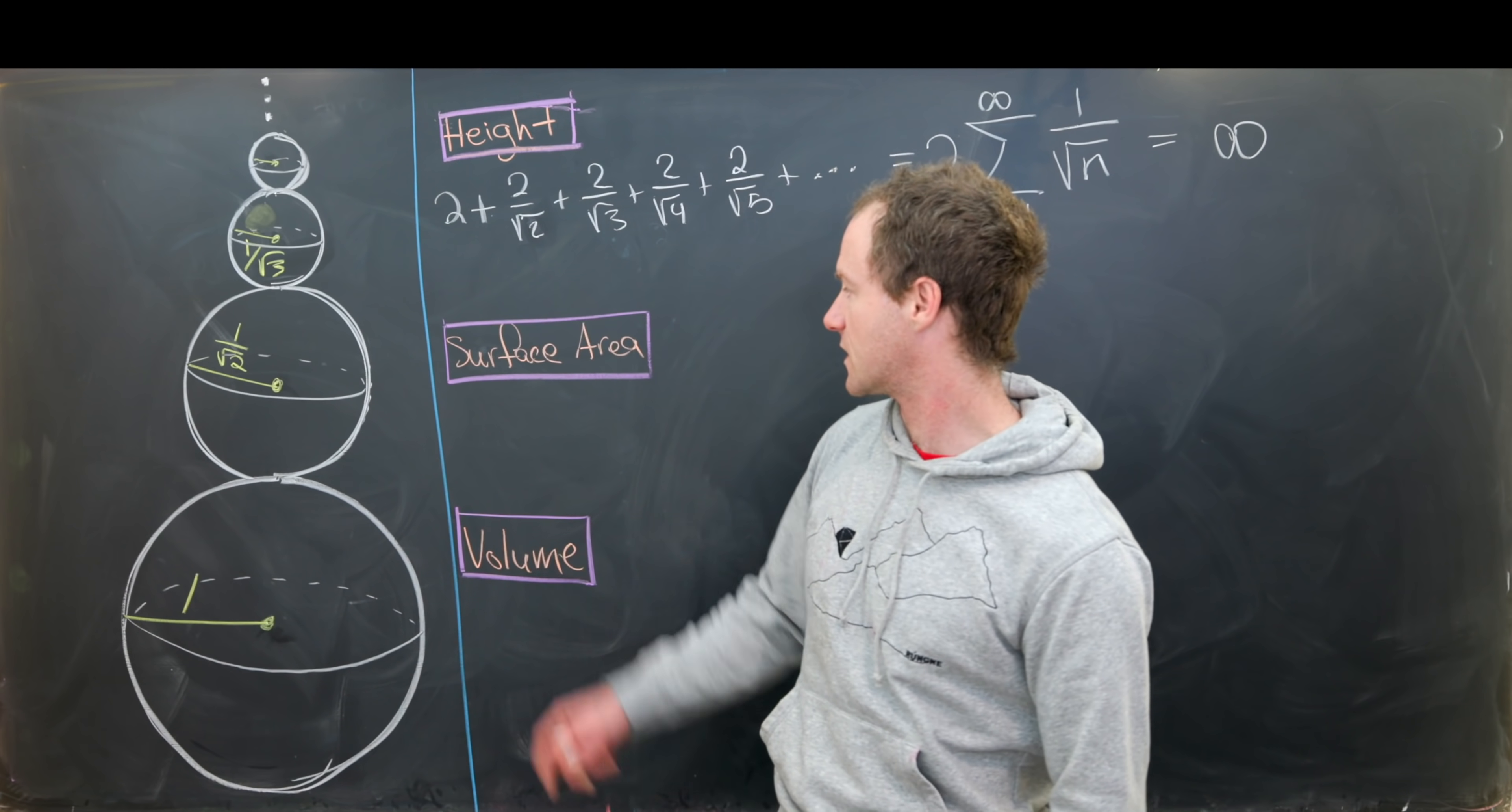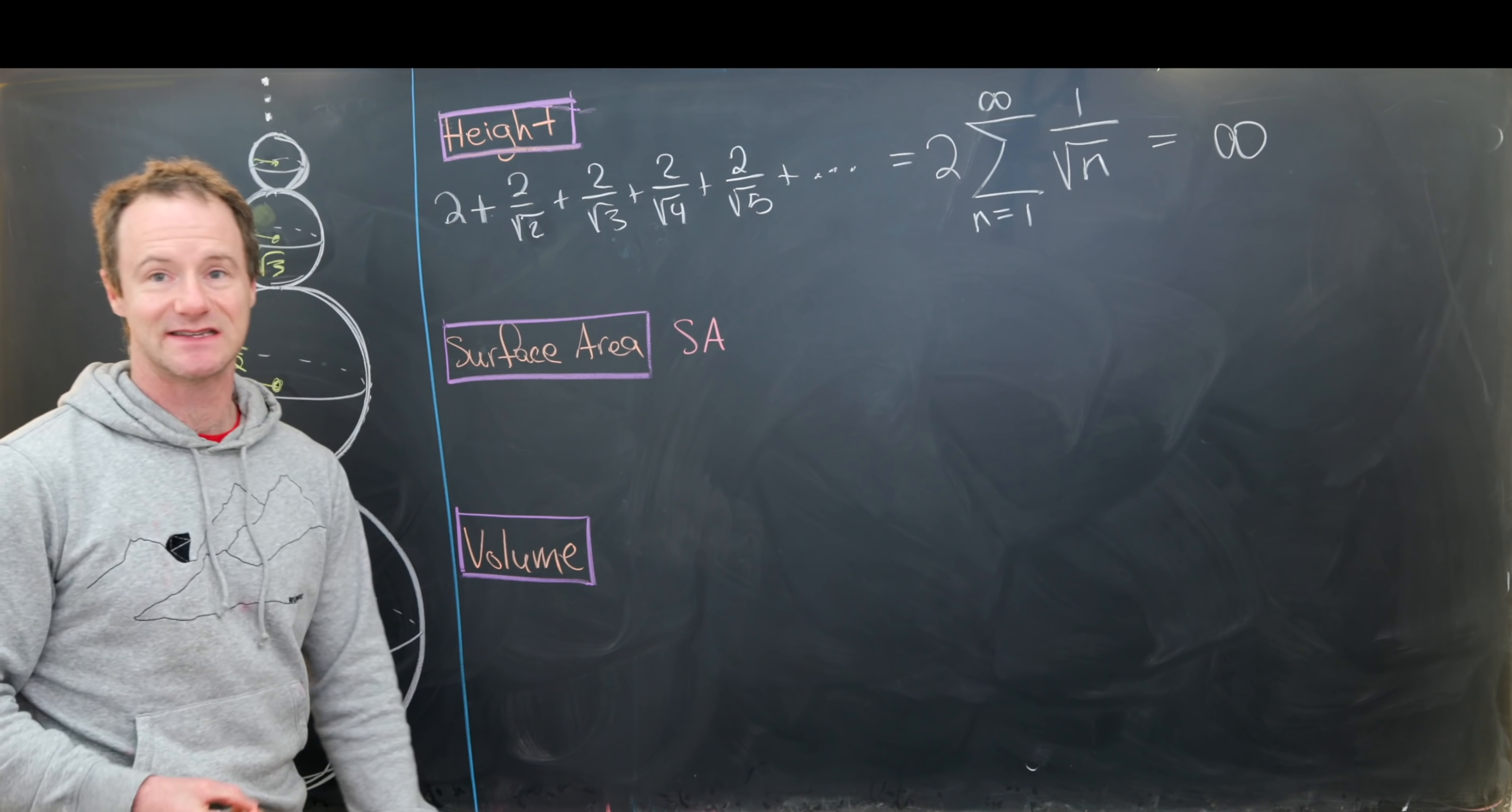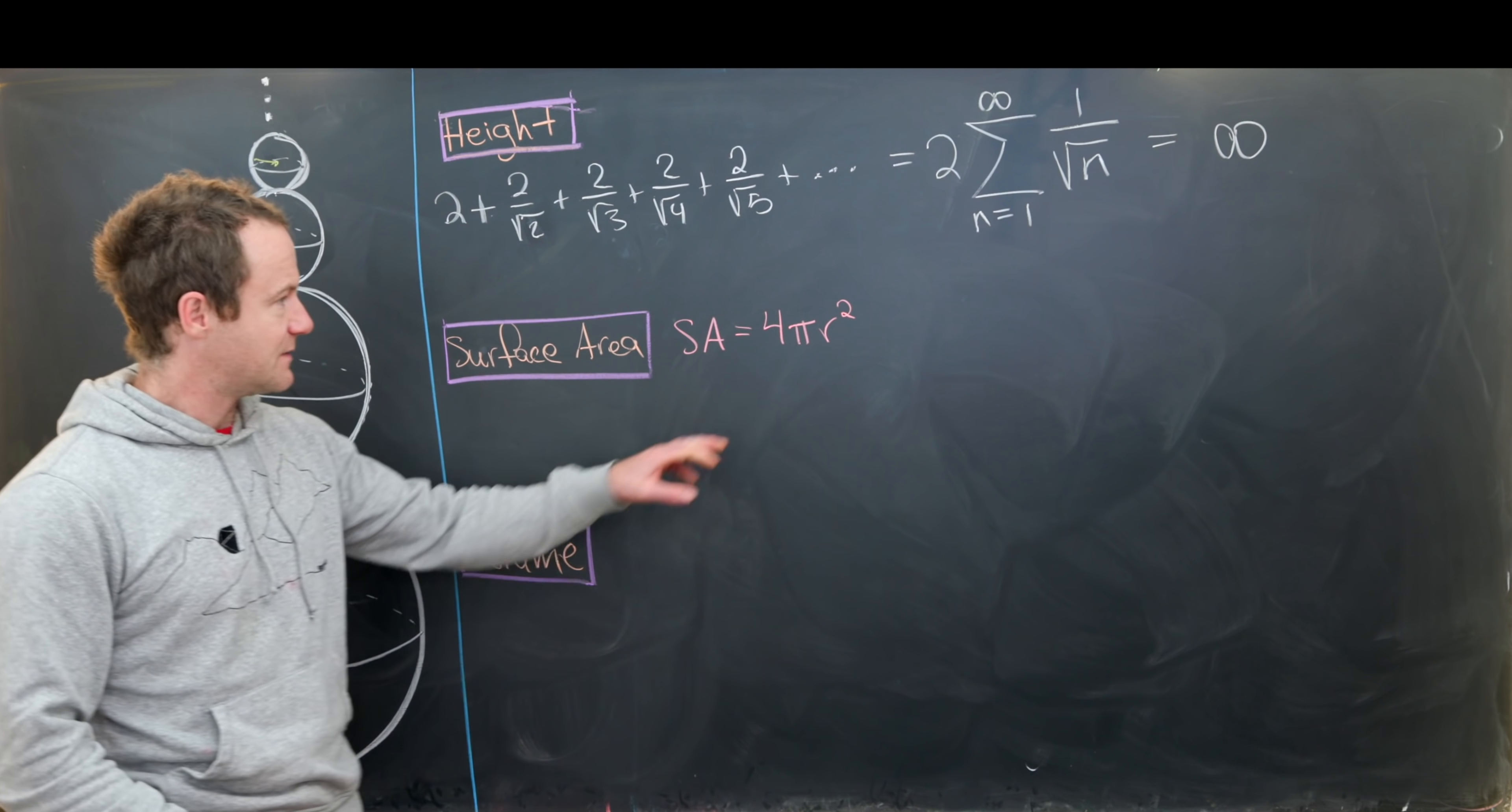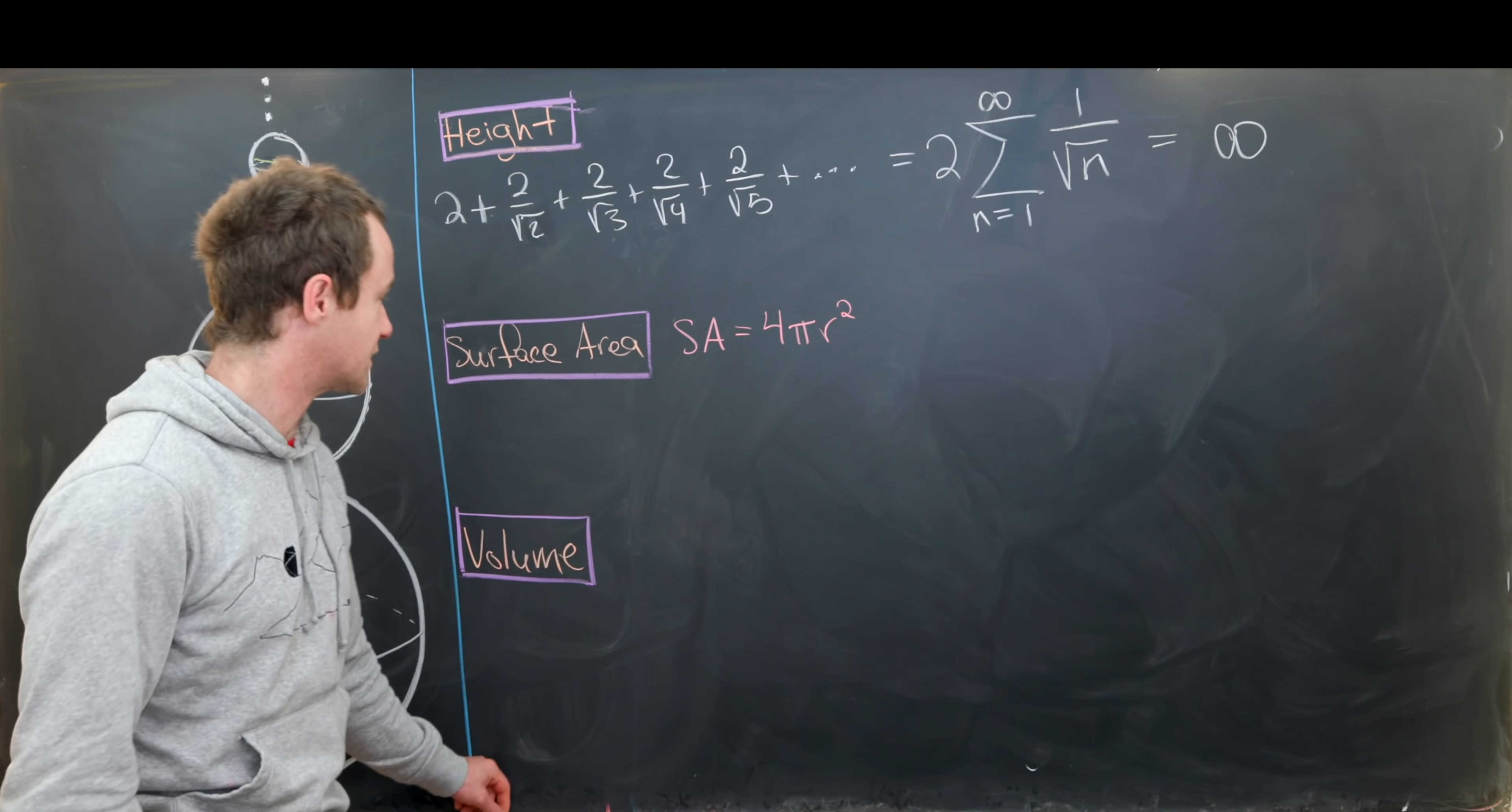Now let's look at the surface area. So maybe before we get started here, I'd like to recall that the surface area of a sphere, so I'll just write that as SA, is equal to four times pi times the radius squared. We won't derive that here. So that means we need to calculate this object for all of these radii. So one, root two, root three, root four, so on and so forth.